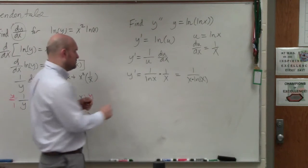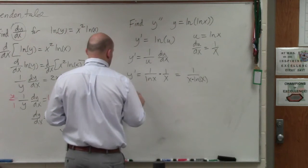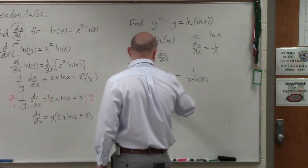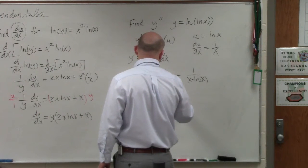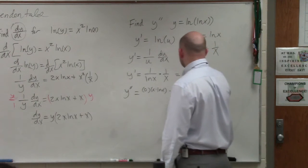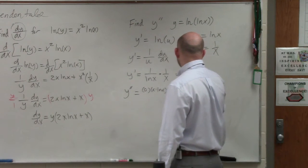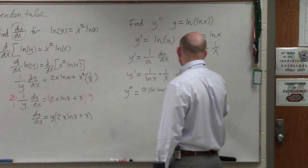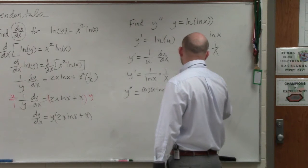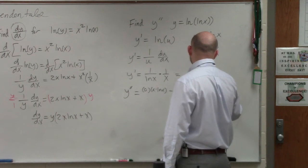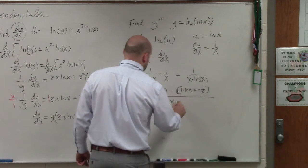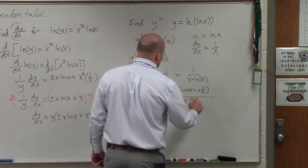So y double prime is basically going to be 0 times x times ln of x minus 1 times the product of x minus 1 times ln of x plus x over 1 over x all over x times ln of x squared.